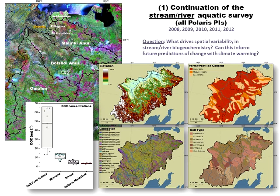Our aquatic survey captures larger sub-basins as well as smaller streams. In the bottom left-hand corner you can see wide variability in DOC concentrations from soil pore waters — one end member — down to streams, rivers, and the Coloma main stem. Capturing those in the aquatic survey gives us an idea of what the potential drivers are of the variability we're observing.